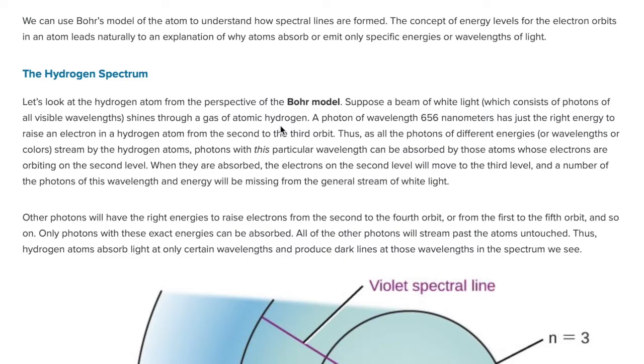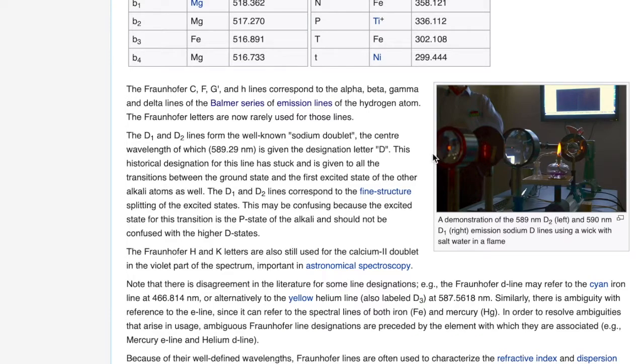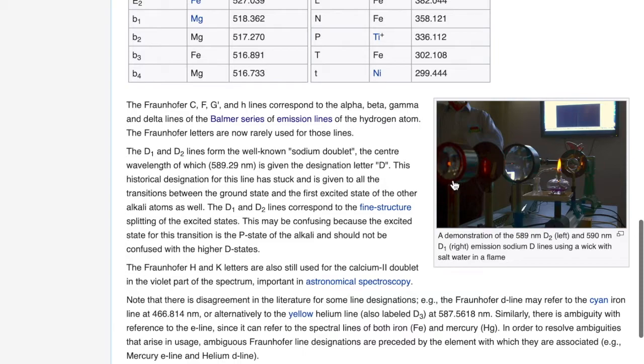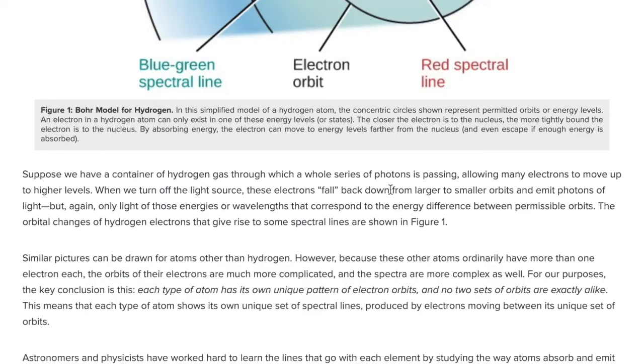Now, how could they test what different elements are doing in the sun? Well, they'd have to do nuclear fusion, wouldn't they? They'd have to do nuclear fusion of hydrogen. So they'd have to do a fusion bomb test and then do the Fraunhofer lines of that. Is that what they did? That doesn't appear to be what they did. Instead, they did this. Okay, and that's for sodium. What about helium? Did they burn helium? I don't, you can't really burn helium. Helium is an inert gas. Suppose we have a container of hydrogen gas through which a whole series of photons is passing, allowing many electrons to move up to higher levels. When we turn off the light source, these electrons fall back down from larger to smaller orbits and emit photons of light. But again, only light of those energies or wavelengths that correspond to energy difference between possible orbits. Okay, well, what's the electron energy level in the sun? Did we replicate that? I don't think we did, unless it's during a nuclear fusion bomb test.